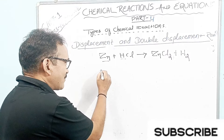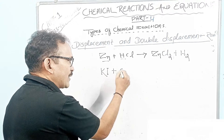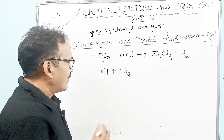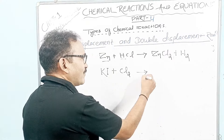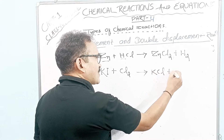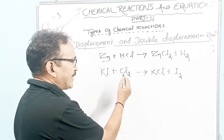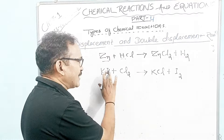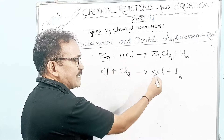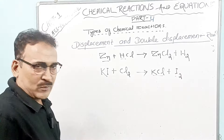Another example involves potassium iodide. When chlorine gas — from the halogen group reactivity series — reacts with potassium iodide, it forms potassium chloride (KCl) plus iodine. Chlorine is more reactive than iodine, so it displaces iodine from its compound. That is why KCl and iodine are formed. This is another example from the halogen group.